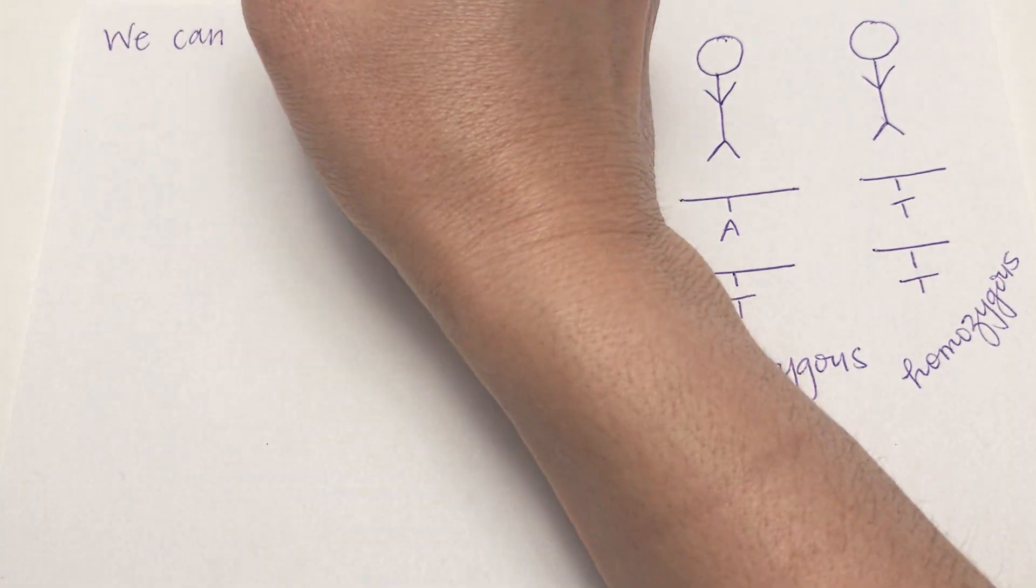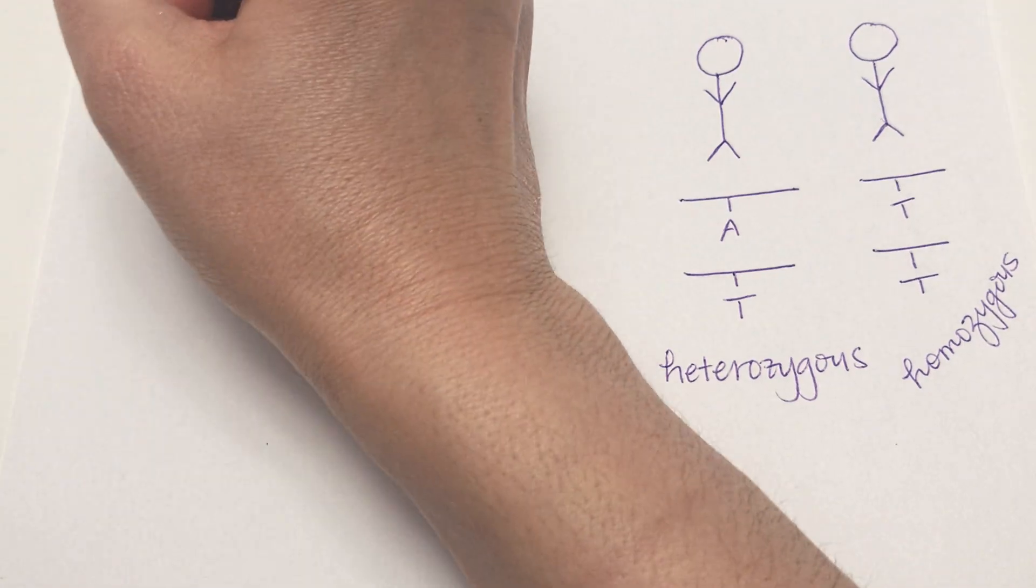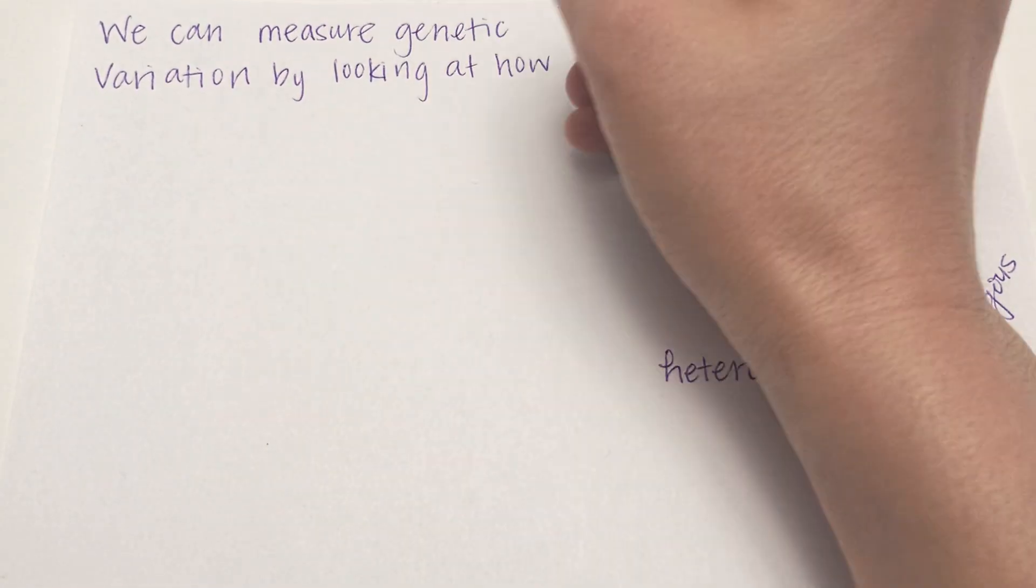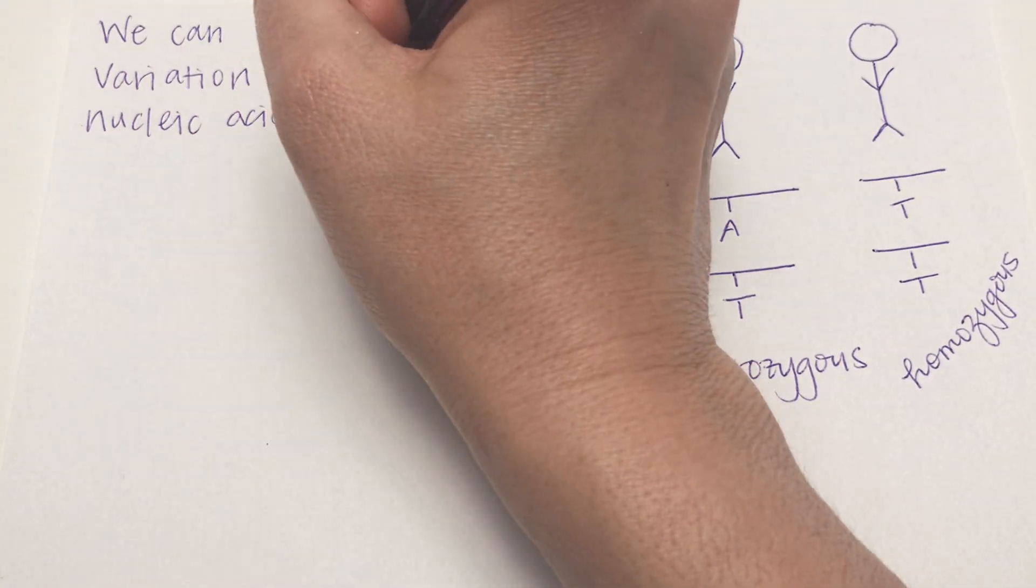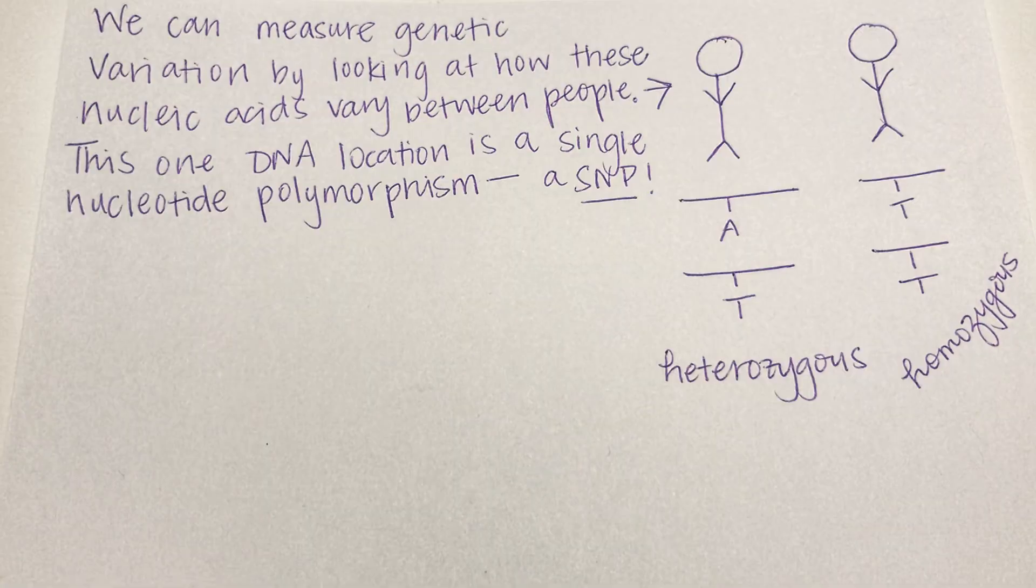This one DNA location is a single nucleotide polymorphism, a SNP. Here one person is heterozygous and one person is homozygous.